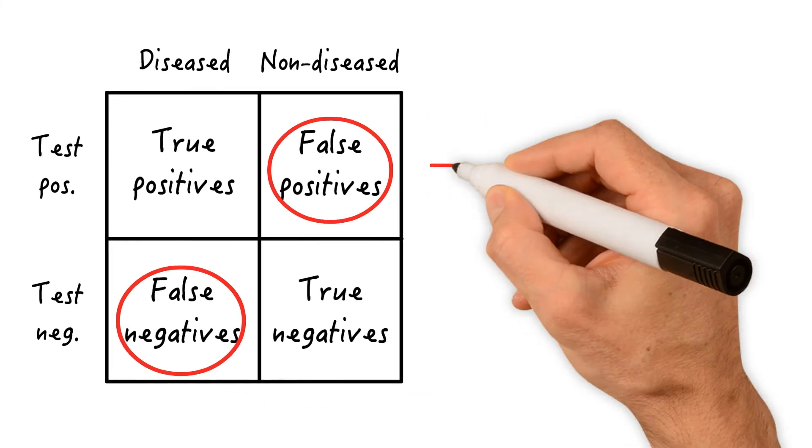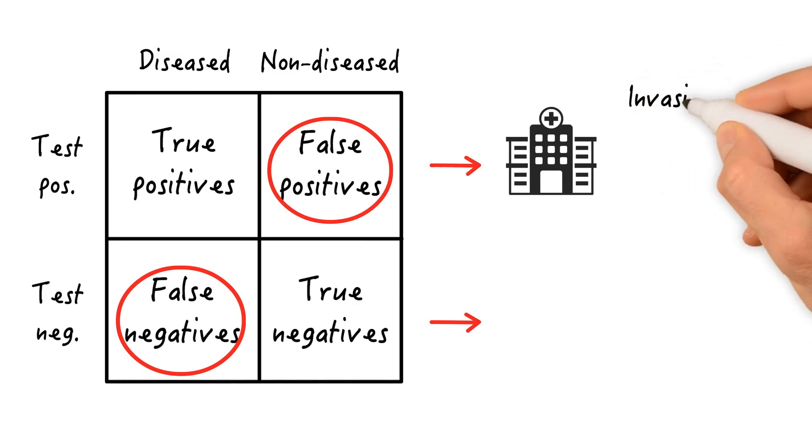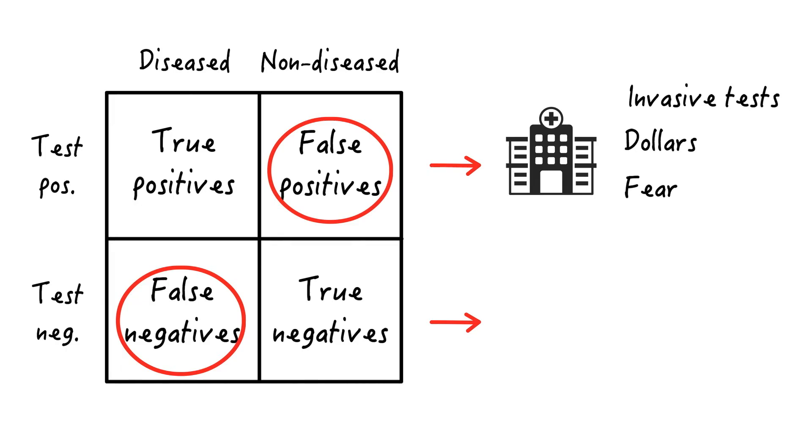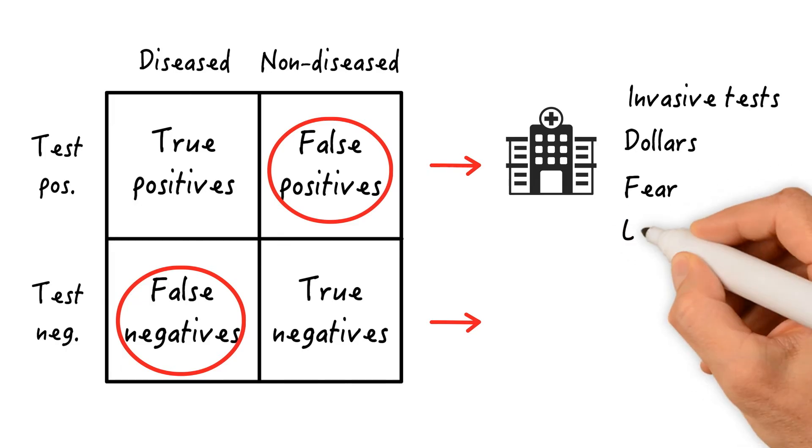Now, what's the problem with these groups? Well, someone who's falsely labeled as positive will be sent for further testing. This will subject them to the risk of these potentially invasive tests, which will consume dollars, create fear in the site of the patients and their relatives. Also, the label associated with the false test might stick for a long time. Think about your own patients. Once falsely diagnosed with hypertension, for example, they might not get rid of that diagnosis forever because it's copied from one letter or patient report to the next.